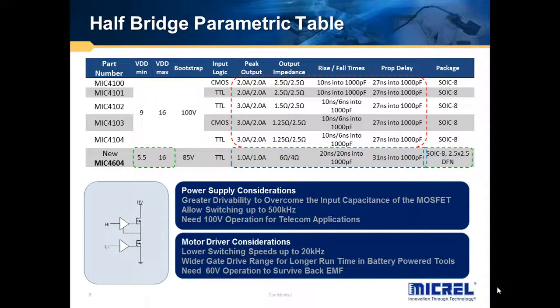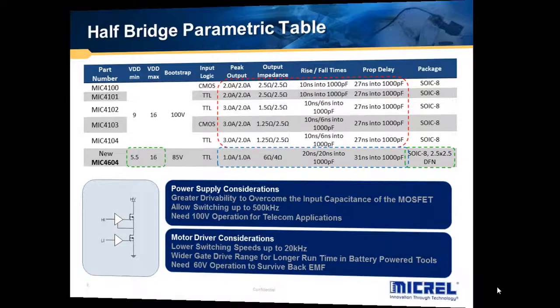So let's look at some of the considerations for motor drive. Typically they don't drive as fast so they don't need to have such high current sinks. And they don't necessarily have to have the higher voltage, so 85 volts is plenty of margin to account for any kind of back EMF. But what they do need is a lower gate drive, so they can take advantage of the power supply packs that are available so they don't have to boost up the voltage like they do for power supply applications.